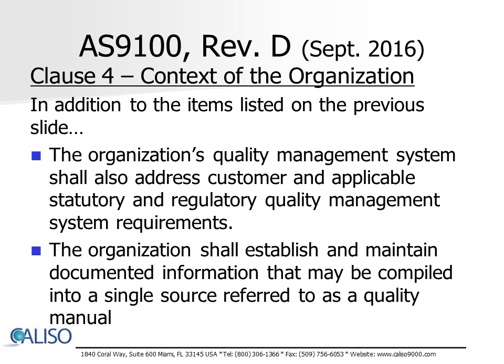In addition to the requirements listed on the previous slide, AS9100D requires that the organization's quality management system shall also address customer and applicable statutory and regulatory quality management system requirements, and also establish and maintain documented information that may be compiled into a single source referred to as a quality manual.